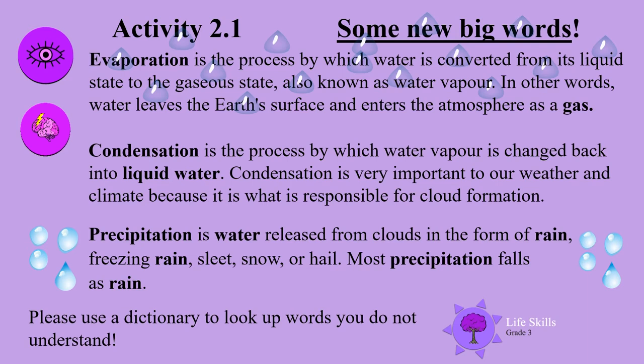Evaporation is the process by which water is converted from its liquid state to the gaseous state, also known as water vapor. In other words, water leaves the earth's surface and enters the atmosphere as a gas. Condensation is the process by which water vapor is changed back into liquid water.